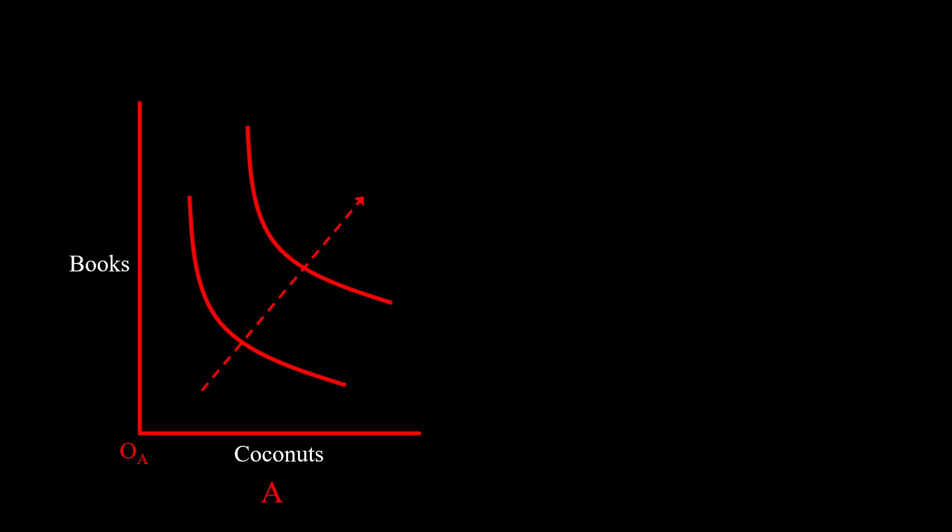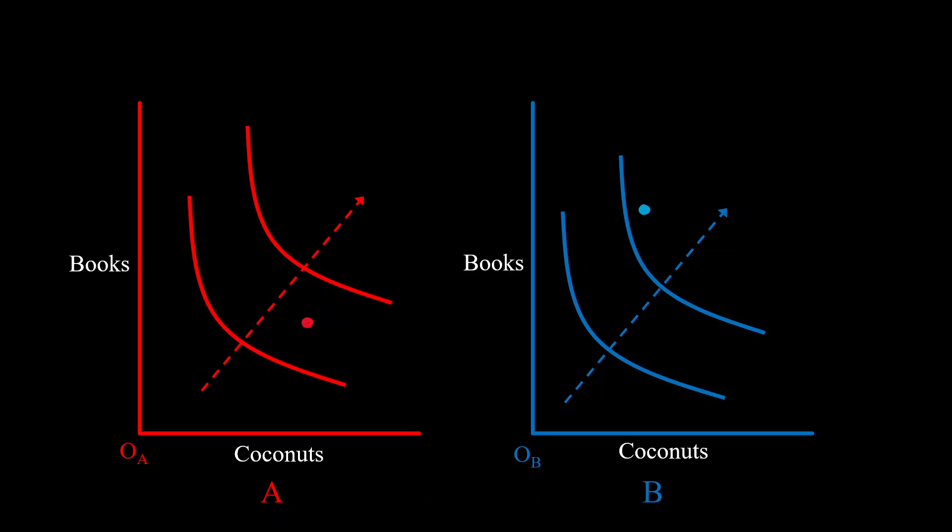Now we have another agent over here, agent B and his blue graph looks exactly the same. Now let's say that agent A and B have some amount of both books and coconuts. So agent A has let's say three coconuts.